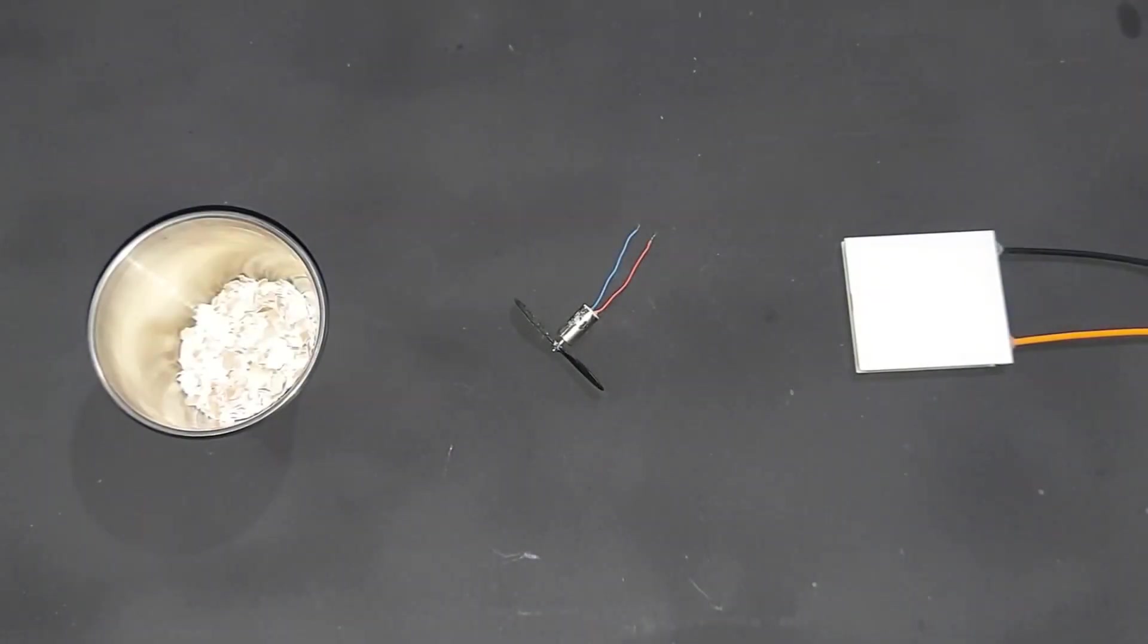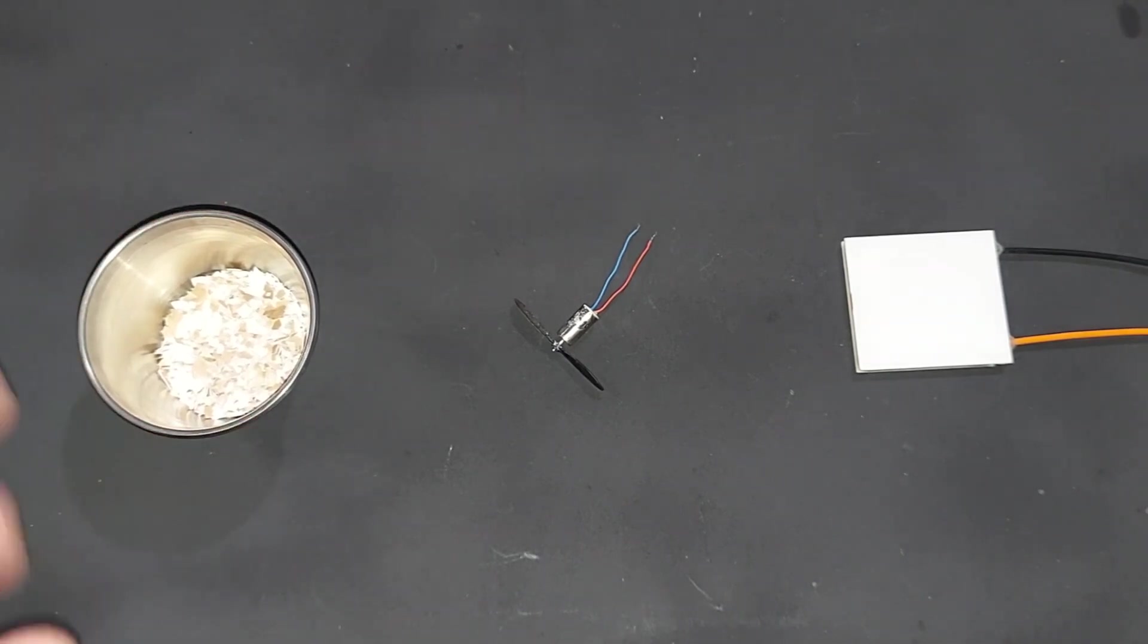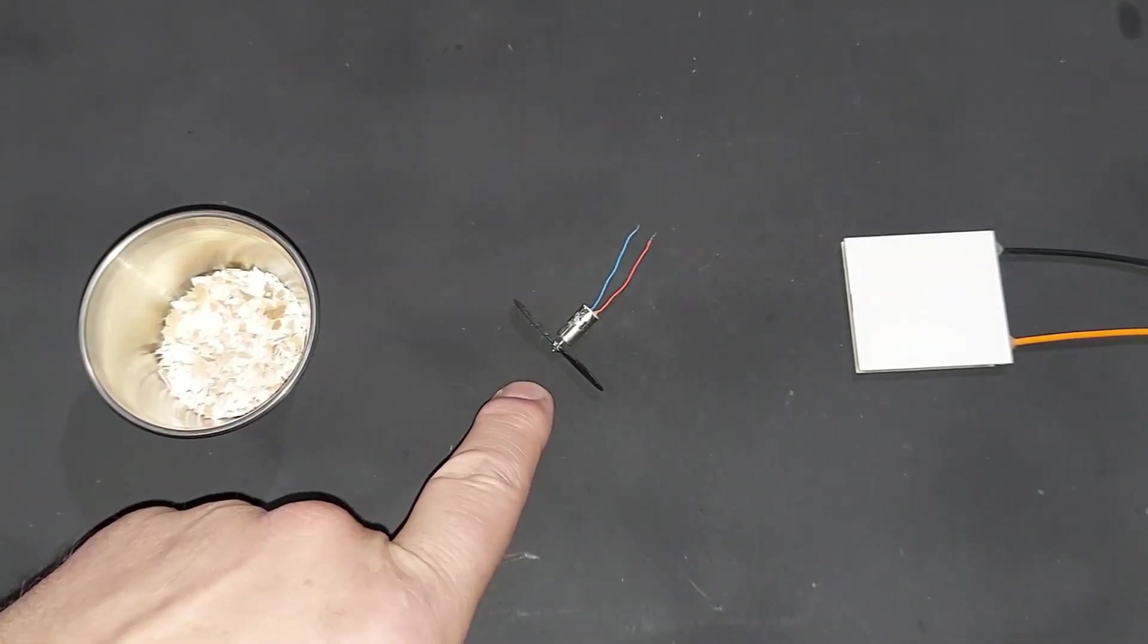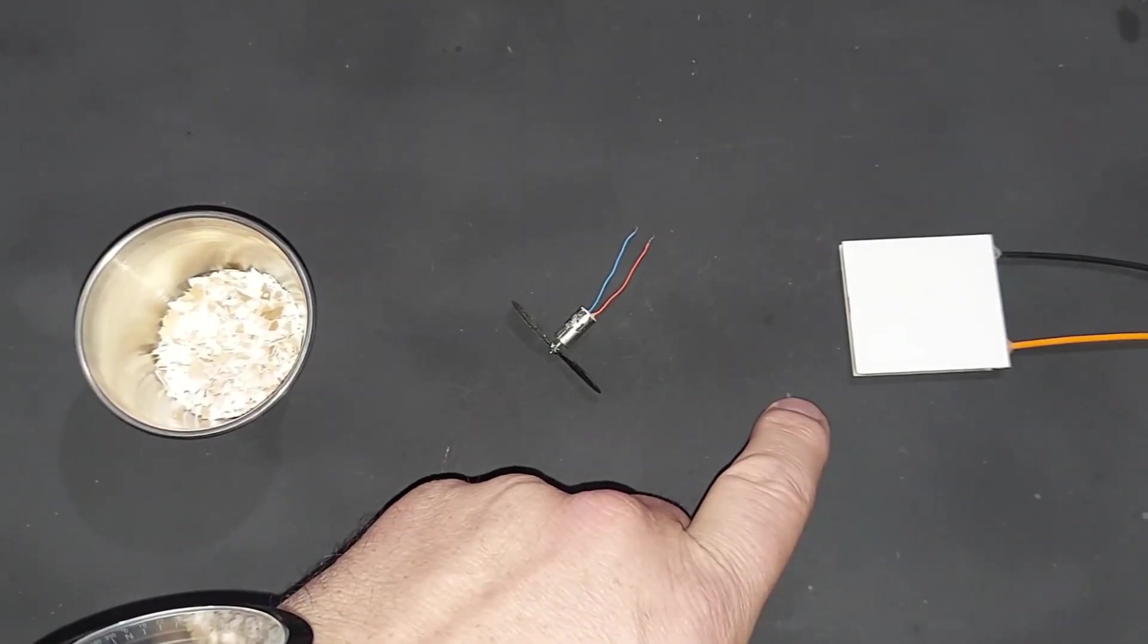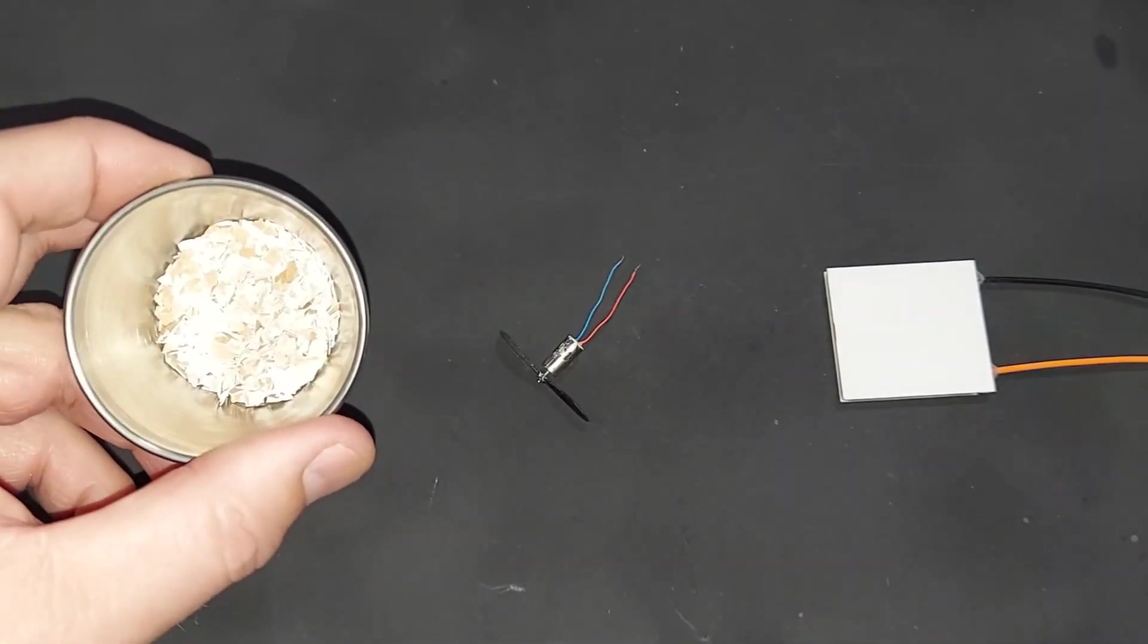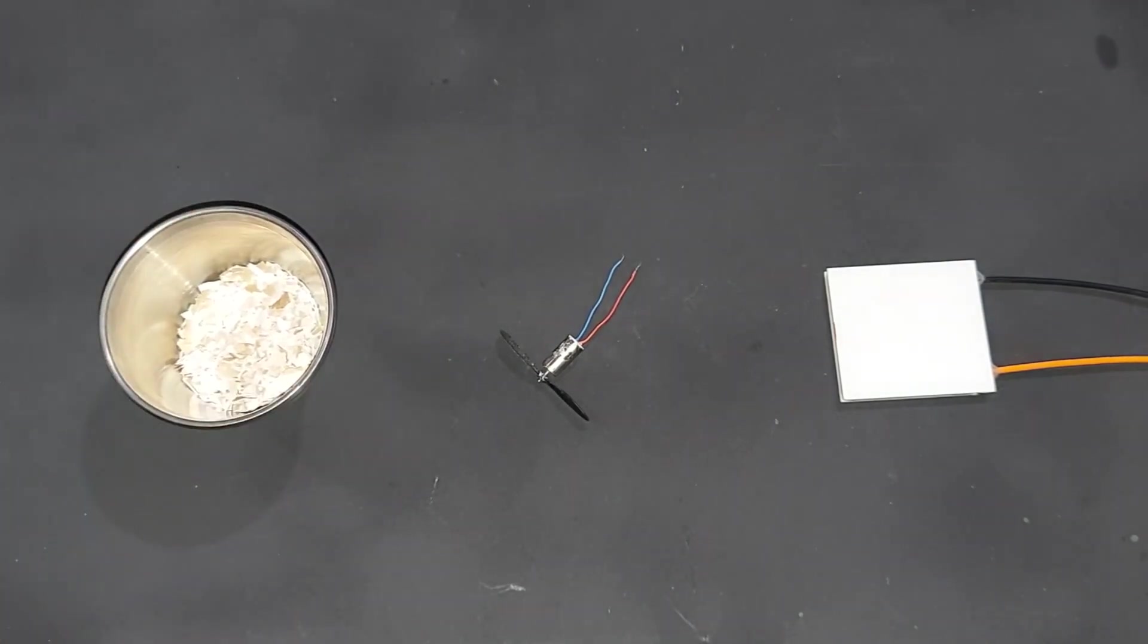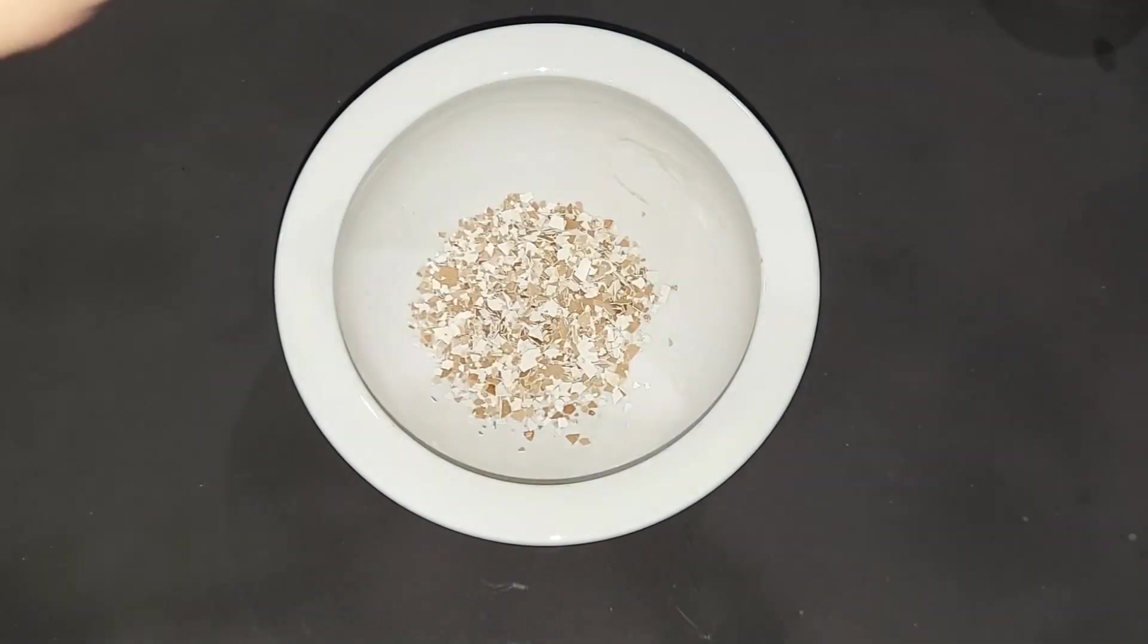In this experiment, here are the main players. I have some chopped up eggshells from a previous experiment, a tiny motor with a propeller, and this unique thing called a Peltier device. To get the best reaction when we convert our eggshells to calcium oxide or quicklime, I'm going to have to chop these up a lot more.